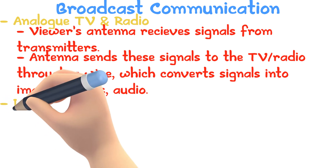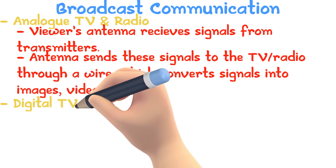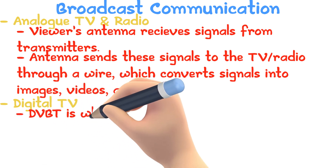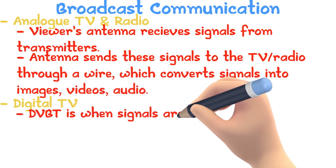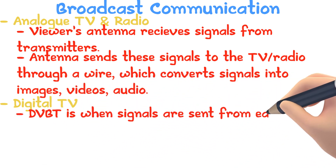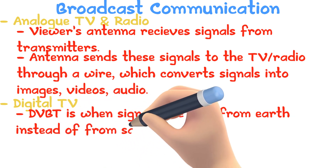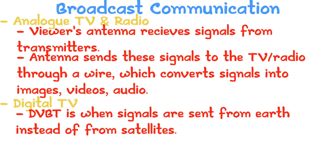Digital TV: DVB is when satellites are placed in orbit and they transfer signals. DVB-T is when these signals are based on Earth, using the same broadcasting antenna that was needed for analog TV.